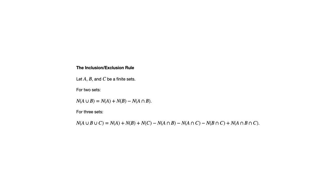That's the inclusion-exclusion rule — it can be really handy. In the homework exercises you'll be tracking different overlapping categories with some given information and figuring out unknown counts. A Venn diagram can be really helpful for that, along with this rule. The next section is section 9.4, which covers the pigeonhole principle. I hope you found this video helpful — I'll see you in the next one.